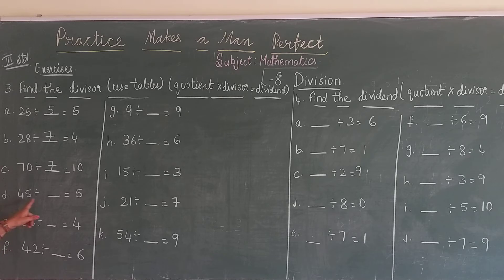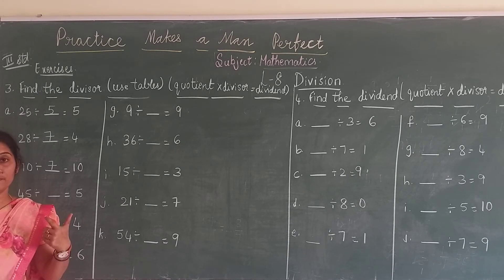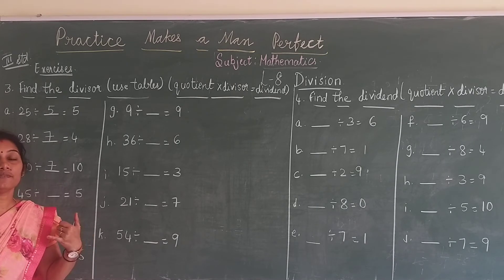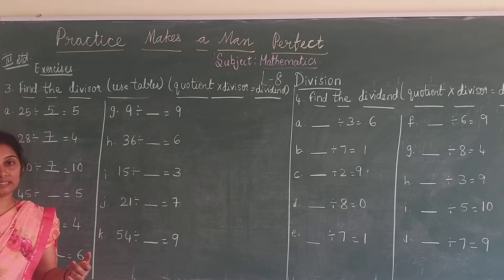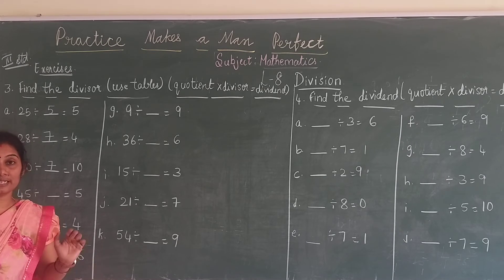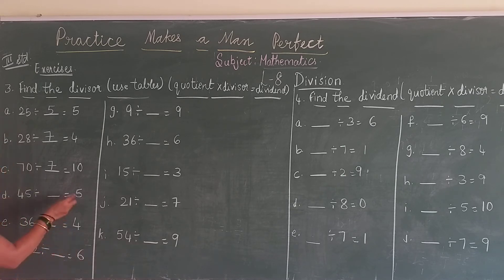Here, 45 divided by that will be equal to 5. 5 ones are 5, 5 twos are 10, 5 threes are 15, 5 fours are 20, 5 fives are 25, 5 sixes are 30, 5 sevens are 35, 5 eights are 40, 5 nines are 45. So it has gone 9 times.